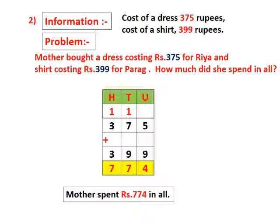We write 4 in the units place in the sum. Then we write the carried over 1 above the tens column. Now we add the tens. In the tens place, 7 tens plus 9 tens plus 1 ten carried over is equal to 17 tens. 17 tens means 1 hundred and 7 tens. We write 7 in the tens place in the sum. Then we write the carried over 1 above the hundreds column.